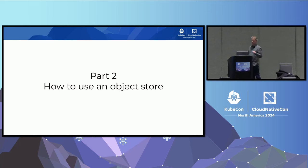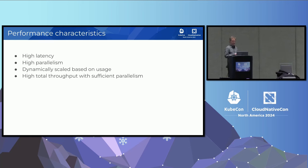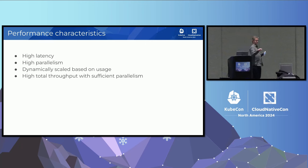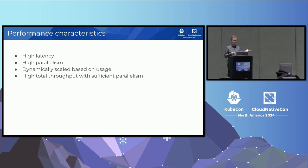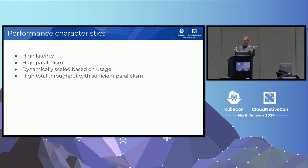Let's talk about how to use object stores — the ways people use them, what's weird about them and what's normal. The performance characteristics are kind of odd if you're used to traditional file systems. There's a lot of latency to an object store: some of it's just going over the network, but a lot of it is also to do with that reliability and availability — the data has to be replicated out to multiple locations every time you write.